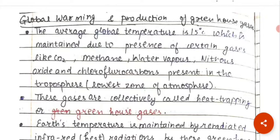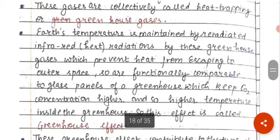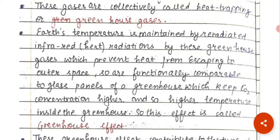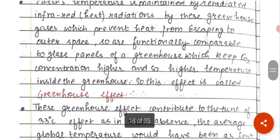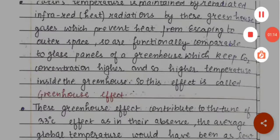These gases are collectively called heat-trapping gases or greenhouse gases. Earth's temperature is maintained by re-radiated infrared radiations by these greenhouse gases, which prevent the heat from escaping into outer space. They are functionally comparable to the glass panels of a greenhouse, which maintain higher CO2 concentration and higher temperature inside.